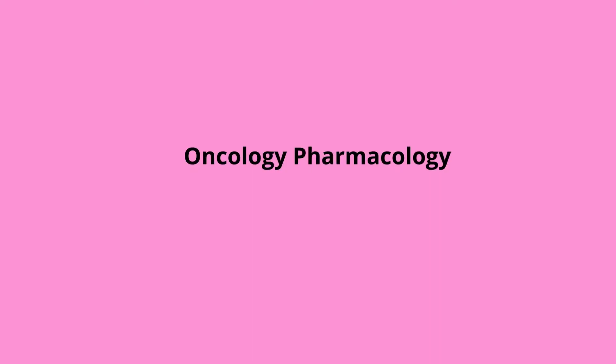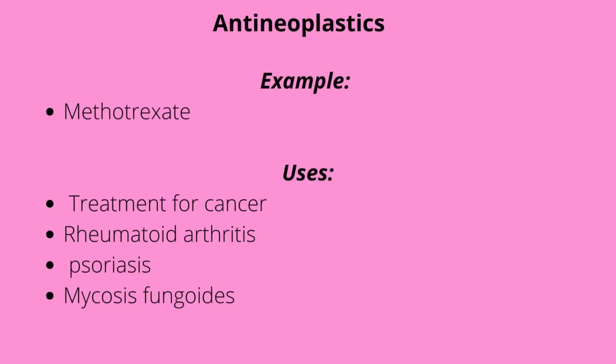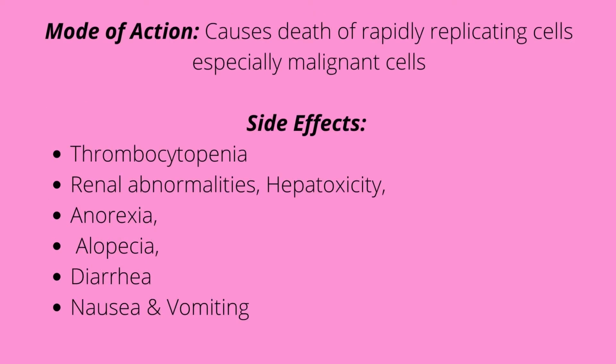In this video we're going to talk about the common oncology pharmacology that you need to know. Starting with antineoplastics — an example of this is methotrexate. It's used for treatment of cancer as well as rheumatoid arthritis, cirrhosis, and mycosis fungoides. Its mode of action causes the death of rapidly replicating cells, especially the malignant cells.